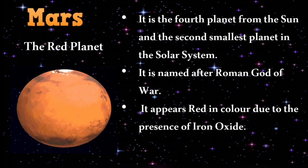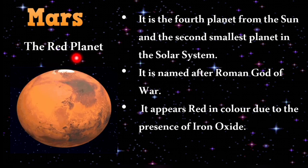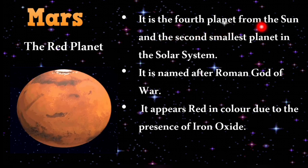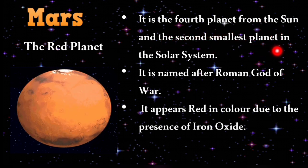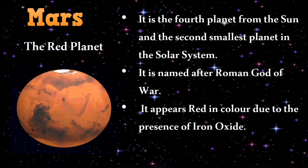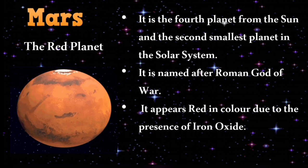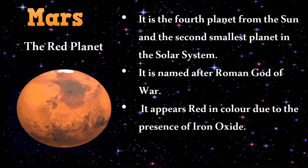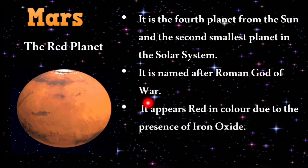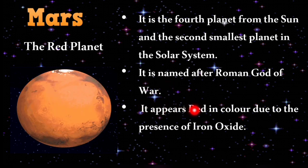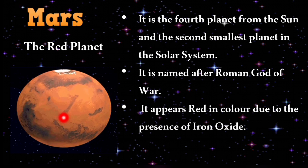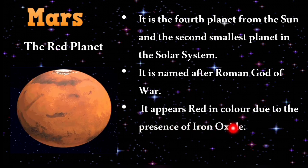Mars is also called the red planet. It is the fourth planet from the sun and the second smallest planet in the solar system. It is named after the Roman god of war, and appears red in color due to the presence of iron oxide.